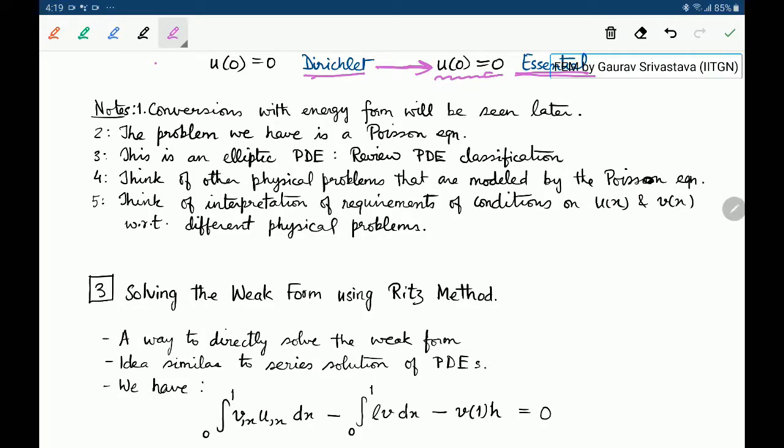As we said earlier, conversions with the energy form will be done later. Some of you would have realized that the problem we are solving of this bar problem is a Poisson equation. You may recall learning about the Laplace equation. Here we are solving an equation of this kind which is a Poisson equation. So Poisson equation represents deformation of an elastic bar. You should also recall that this is an elliptic partial differential equation. If you do not, please review the PDE classifications for second order PDEs.